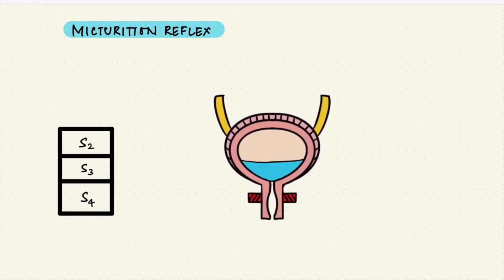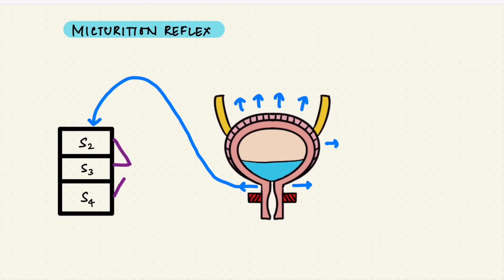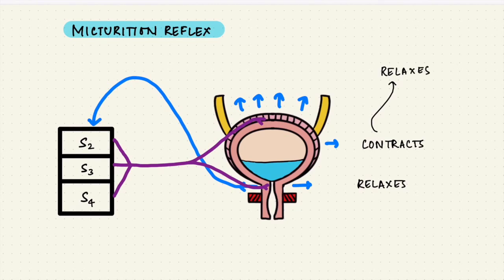So now we get to the micturition reflex. So the bladder fills, the bladder stretches. The stretch receptors detect it, particularly at the posterior urethra. The sensory signals go to the sacral spinal cord, back through the parasympathetic fibers, causing contraction of the detrusor and relaxation of the internal sphincter. But the bladder is only partially filled, so the contractions will stop after a while, the detrusor relaxes, and the pressure goes back down to baseline.